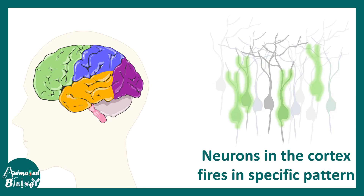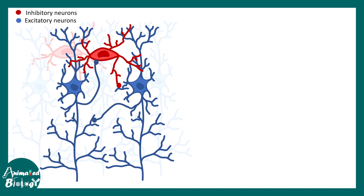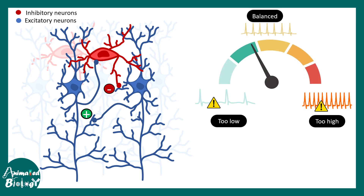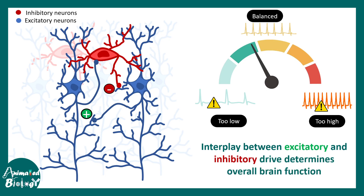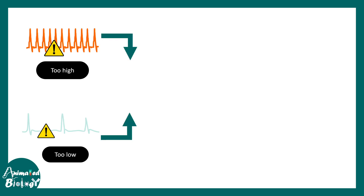All neuronal activity in a circuit is maintained by two types of forces: one is inhibitory neuron-mediated inhibitory drive, and another is excitatory neuron-mediated excitatory drive. These components are really important to maintain the excitatory versus inhibitory balance in a circuit. This mechanism ensures activity is not too low or too high, and the interplay between excitatory and inhibitory drive determines overall brain function.